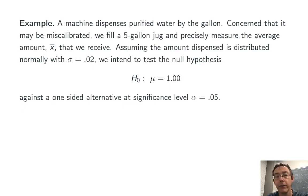Assuming the amount dispensed is distributed normally with σ = 0.02, we intend to test the null hypothesis H₀: μ = 1.00 against a one-sided alternative at significance level α = 0.05.